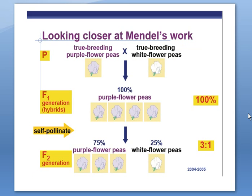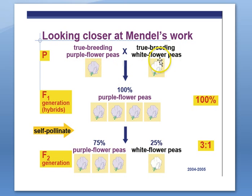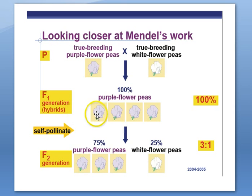Mendel crossed true-breeding purple flower peas with true-breeding white flower peas. True breeding means that when you cross it with itself, it only produces that same trait. In the F1 generation, all the flowers were purple — interesting, since we started with purple and white. Even stranger, when he crossed those F1 purple plants together, three-fourths of the offspring were purple and one-fourth were white. It was almost like the white flower trait skipped a generation, and that's exactly what Mendel set out to explain.